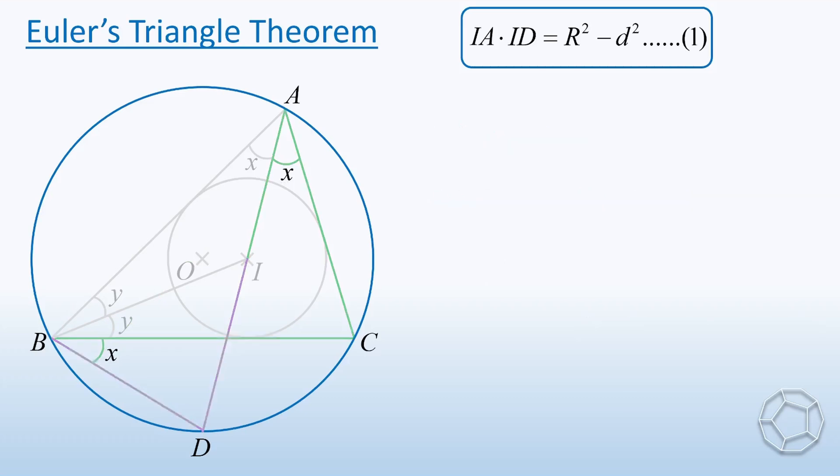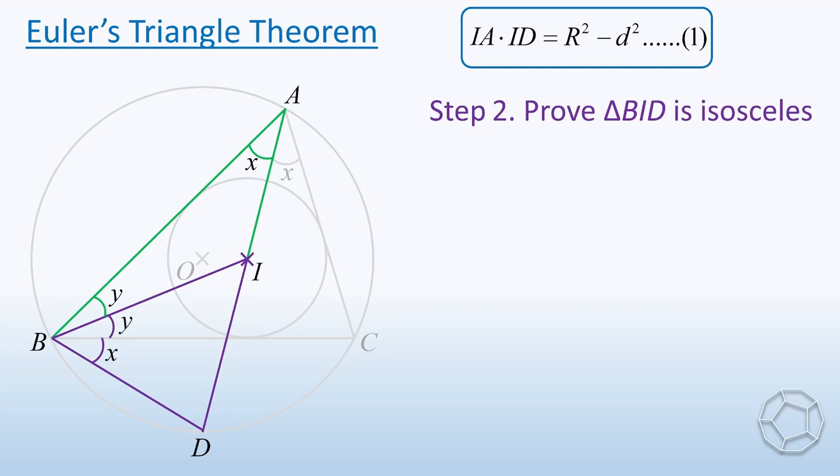Now we look at this purple triangle. We are going to prove that it is isosceles. Here, angle B is equal to X plus Y. For angle I, it is actually an exterior angle of the green triangle. So it is also equal to X plus Y. Therefore, the two sides BD and ID are equal because of sides opposite equal angles.